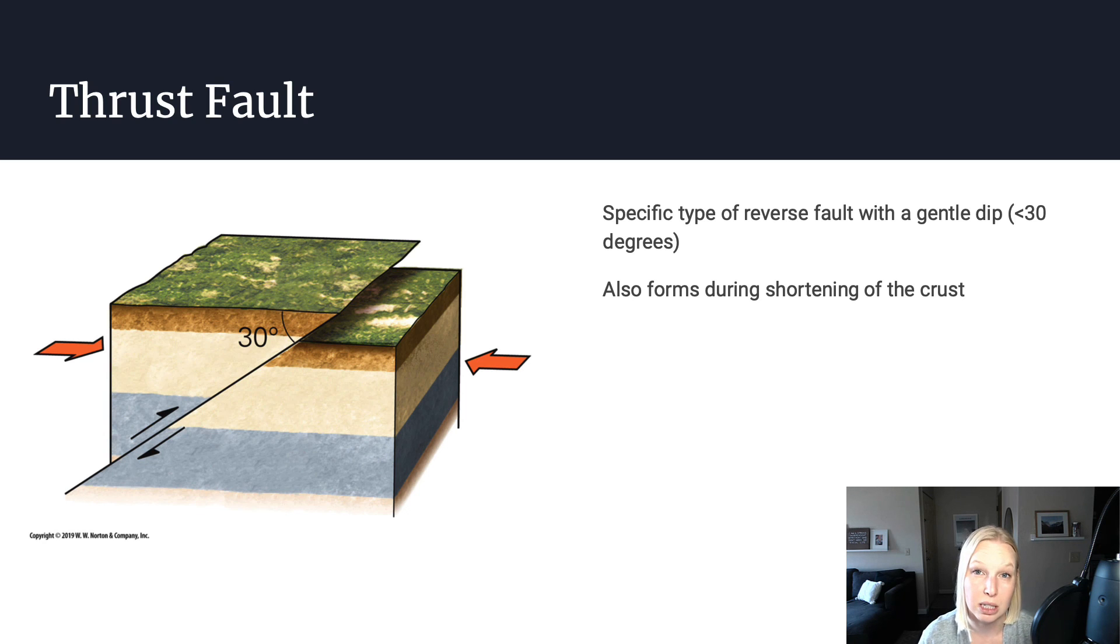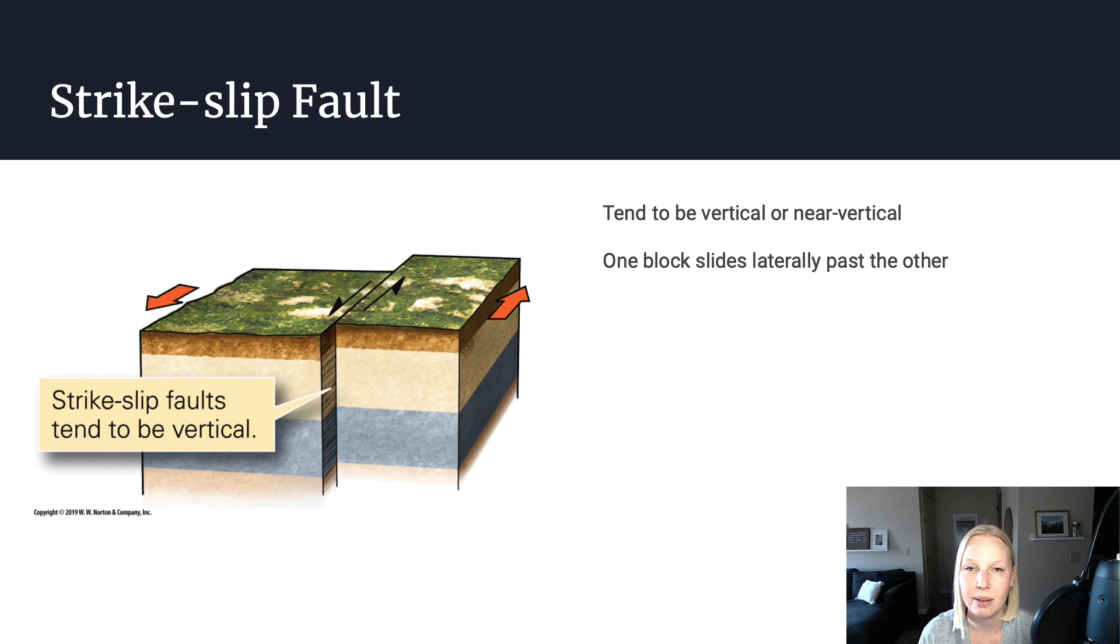These are also dip slip faults. Then we have what we call strike slip faults. So the three previous examples were all dip slip faults. A strike slip fault is when you have two fault blocks that are moving side to side from one another.